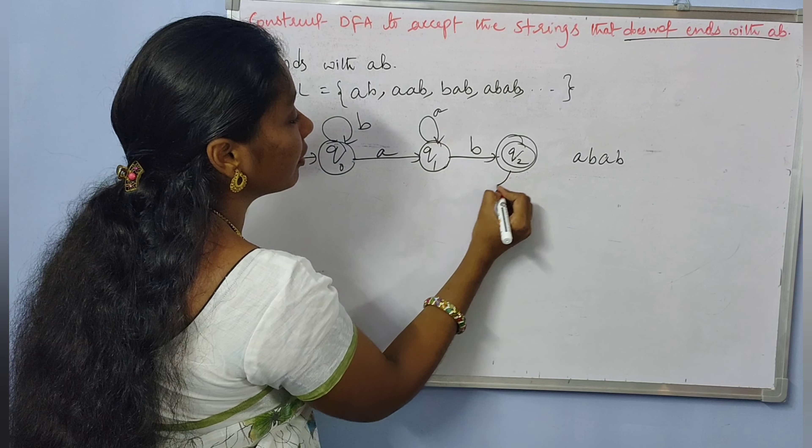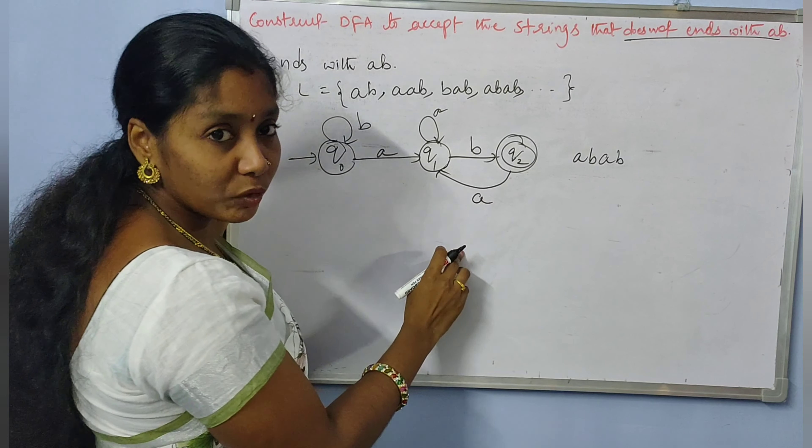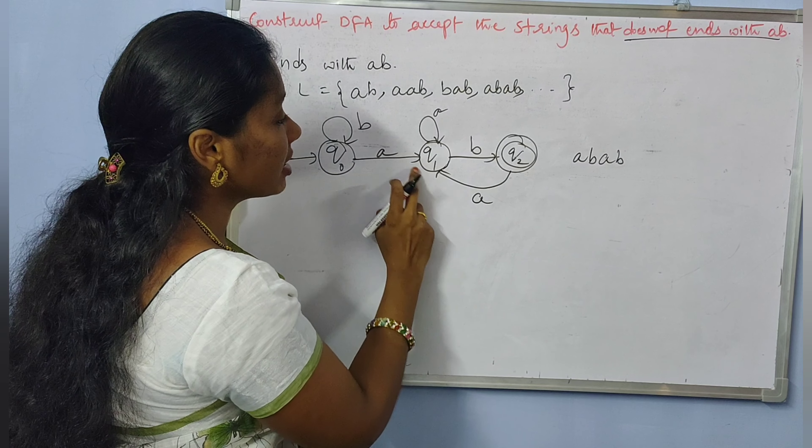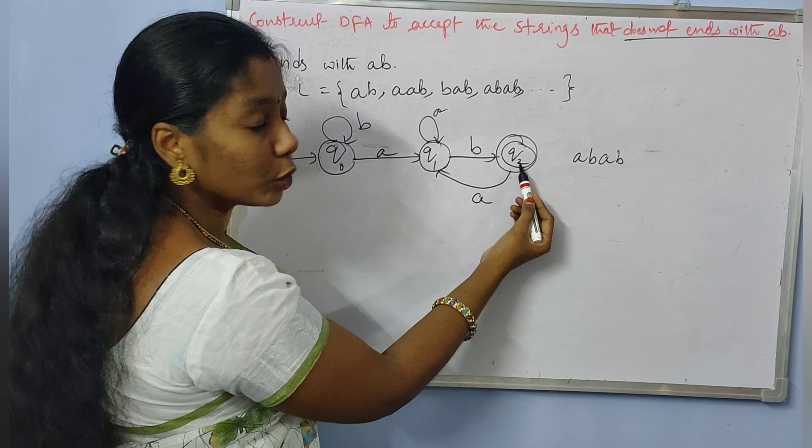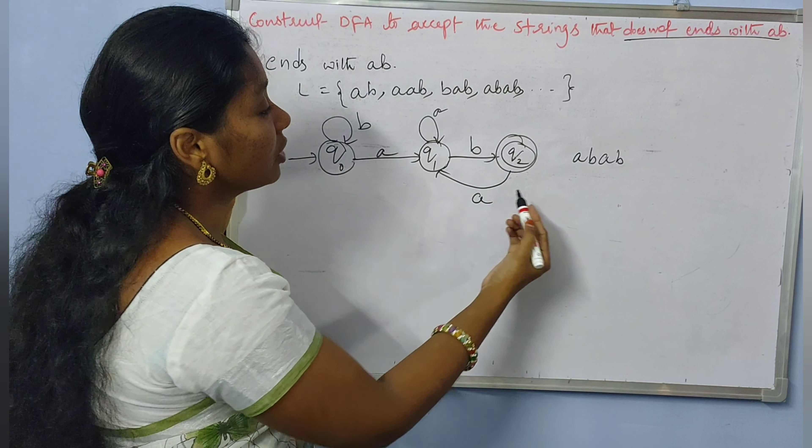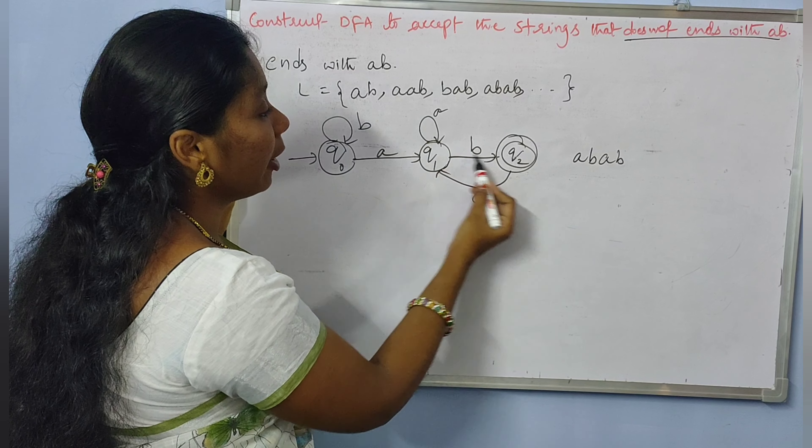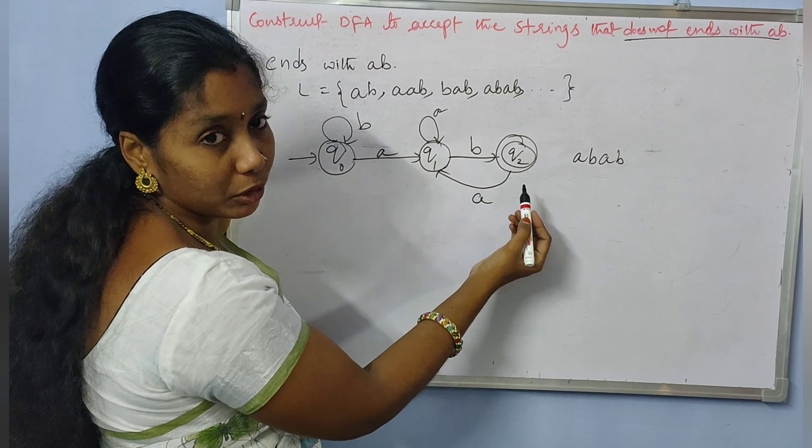So here we need to connect A to state Q1. So if A transition occurs and then B comes, it can reach Q2 again to end with AB.